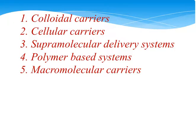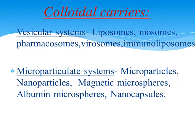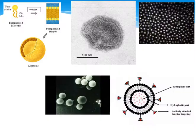The carrier systems are also broadly classified as colloidal carriers, cellular carriers, supramolecular delivery systems, polymeric-based carriers and macromolecular carriers. Colloidal carriers are further divided into two groups: vesicular systems, which include liposomes, neosomes, pharmacosomes, verosomes and immunoliposomes, and microparticulate systems, which include microparticles, nanoparticles, magnetic microspheres, albumin microspheres and nanocapsules.